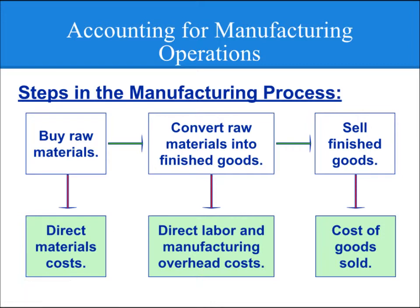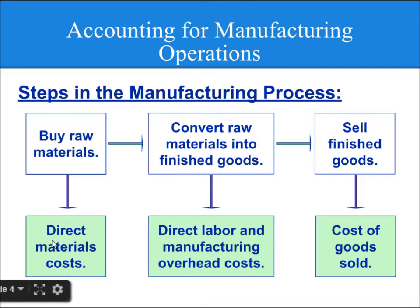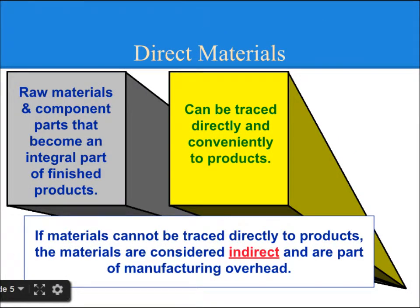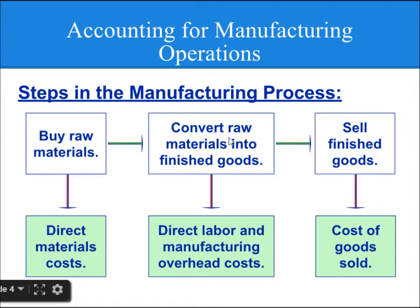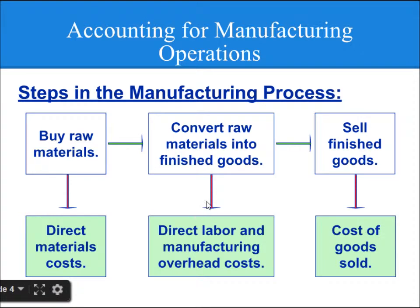Accounting for Manufacturing Operations. The steps involved in the Manufacturing Process are: Buy Raw Material — buying raw material will involve Direct Material Cost; Convert Raw Material into Finished Goods — the costs involved will be Direct Labour and Manufacturing Overhead Cost; and finally Sell Finished Goods — the cost involved will be the Cost of Goods Sold.